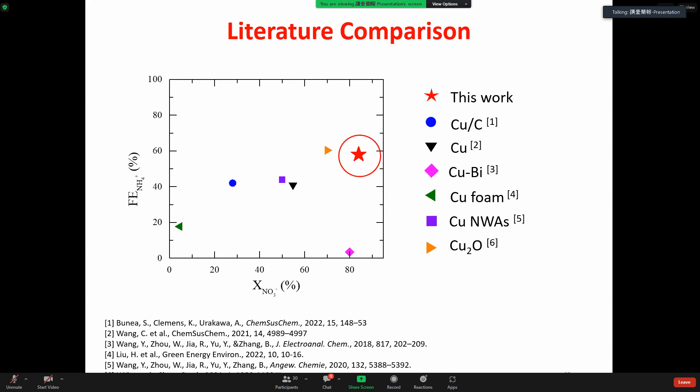Then I did a comparison between our work and the copper catalyst in the literature. As the figure shows here, our copper porous catalyst is superior to many copper-based catalysts regarding their Faraday efficiency and nitrate conversion.